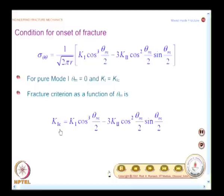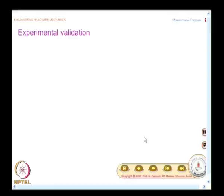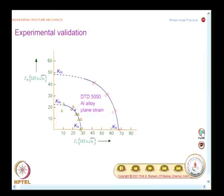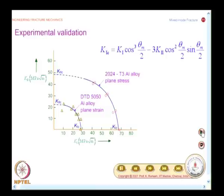The expression to check is: K1c = K1 cos³(θm/2) − 3K2 cos²(θm/2) sin(θm/2). People have found this matches with experiments. A graph plots K1 and K2 data on x and y axes for two different materials; circles and triangles from experiments, and the theoretical line from this expression, show good agreement.